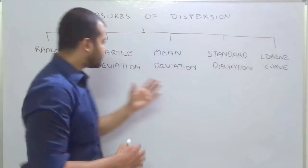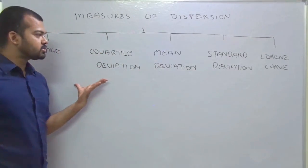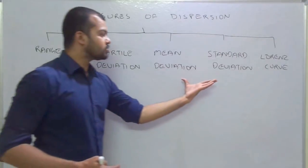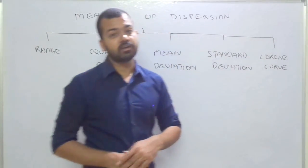First two is the positional dispersion. It means they will show the position. The next two is related to calculation. And the last one is a graphical method.